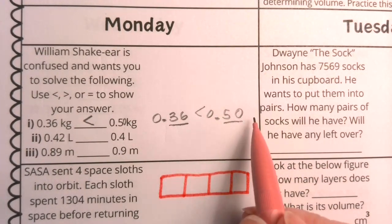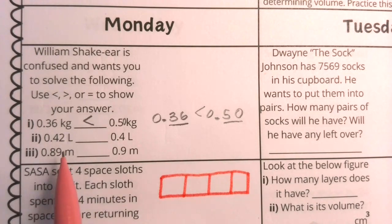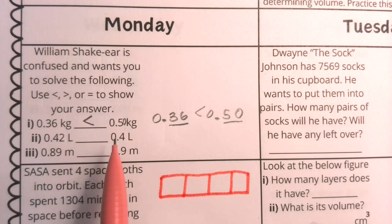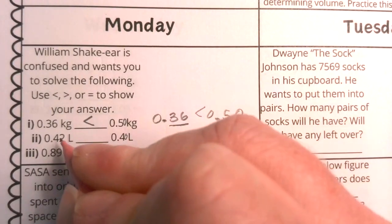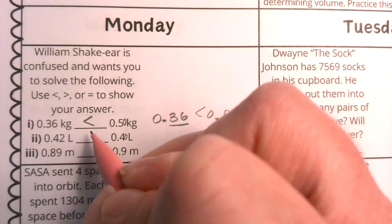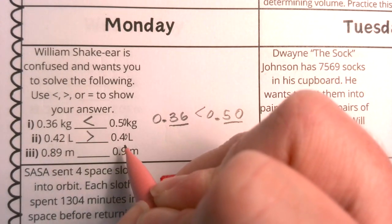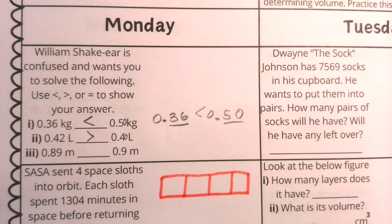Remember that, boys and girls, zeros on the end of a decimal can be added endlessly, and they don't change the value. That will help us with this one as well. We have 0.42 as compared to 4 tenths or 40 hundredths. Well, this one in this case is larger because 42 is greater than 40. 0.42 is greater than 40 hundredths.